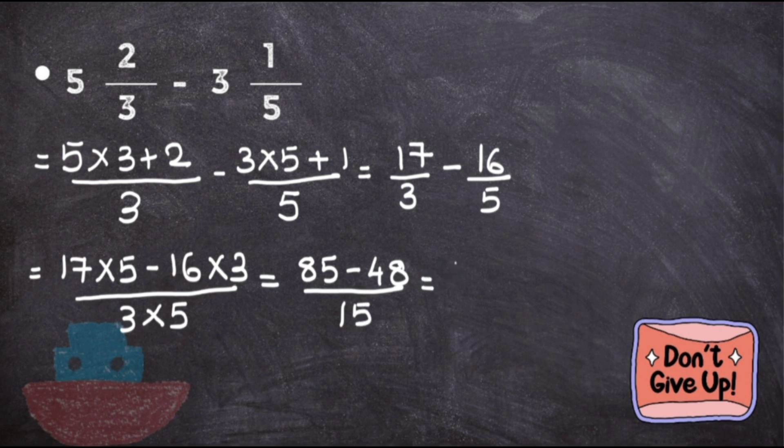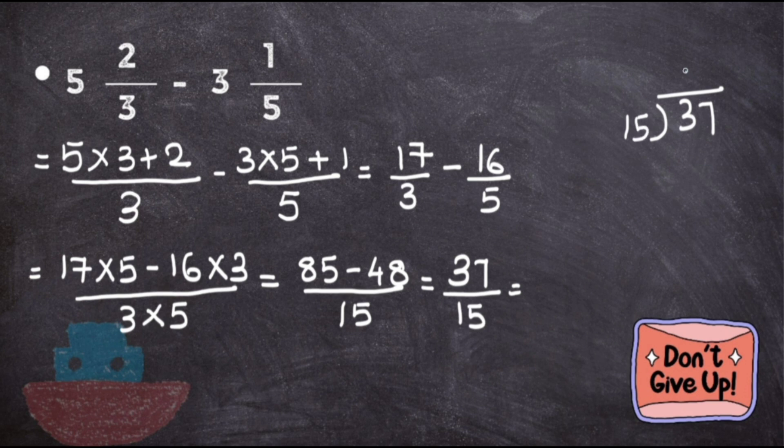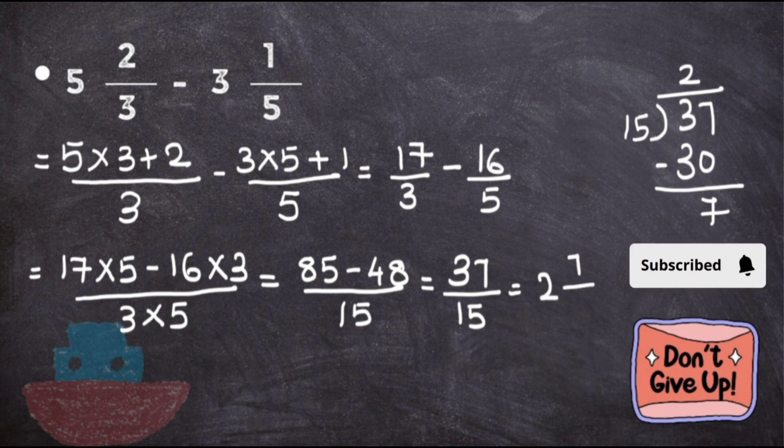So this gives me 37 upon 15. Check whether it is the simplest form: do 37 and 15 go in one single table except 1? No. Is it a proper fraction? No, it's improper because 37 is bigger than 15, so convert it to a mixed fraction by dividing 37 by 15. The answer for this subtraction is 2 7/15. I hope you have understood how to solve addition and subtraction of mixed fractions. Please share with your friends and subscribe to my channel. Continue in the next class. Till then, take care and bye-bye.